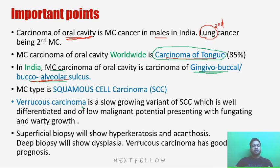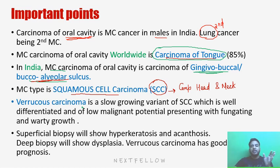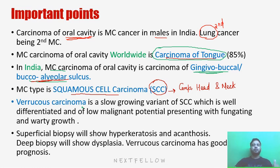And what is the most common histopathology? The most common histopathology is squamous cell carcinoma. So the most common type of oral carcinoma is squamous cell carcinoma. If you talk about complete head and neck, the most common type of cancer is squamous cell carcinoma — whether it is oral cavity, nasopharynx, or laryngeal carcinoma. Complete head and neck carcinomas are mainly squamous cell carcinoma.